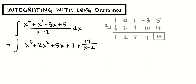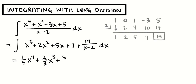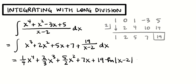And this is something we'd be much more easily able to take the antiderivative of. We can just use the power rule: 1/4 x to the 4th, 2/3 x cubed, 5/2 x squared, 7x. And then the 19 over x minus 2 term — that's like 19 times x minus 2 to the negative first power. If I try to do the power rule on it, it would divide by 0, so that's going to be 19 times the log of the absolute value of x minus 2, plus c.